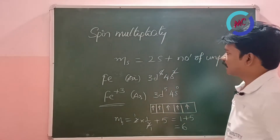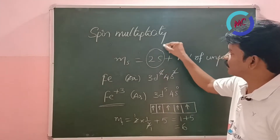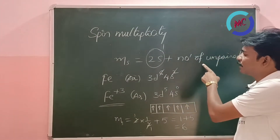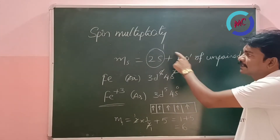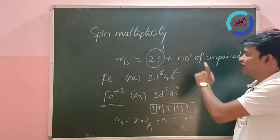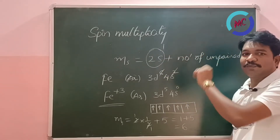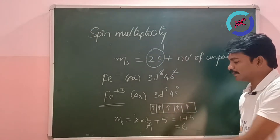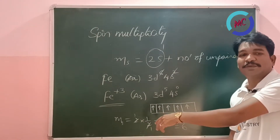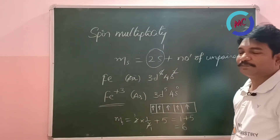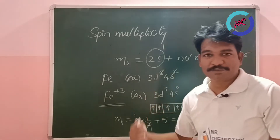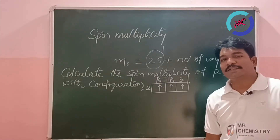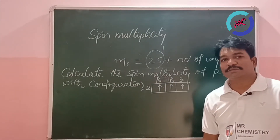Note that 2S always gives the value 1. So after finding the number of unpaired electrons, just add 1 to get the spin multiplicity — no need to calculate 2S every time. Please note this down.